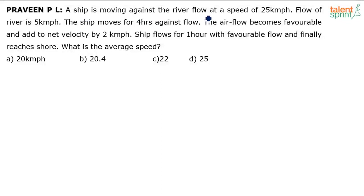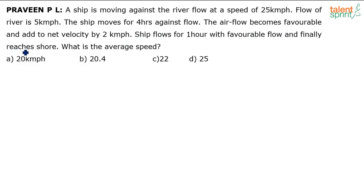A ship is moving against the river flow at a speed of 25 kilometers per hour. The flow of the river is 5 kilometers per hour. The ship moves for 4 hours against the flow. The air flow becomes favorable and adds to net velocity by 2 kilometers per hour. The ship flows for 1 hour with favorable flow and finally reaches the shore. What is the average speed?